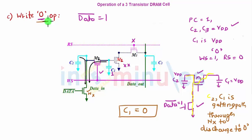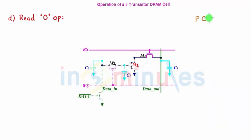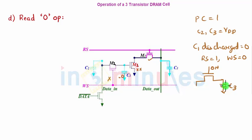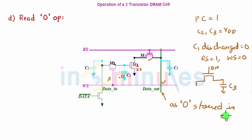Now let's verify by reading this 0. First PC equal to 1, so C2 and C3 equal to VDD. C1 is discharged to 0, so M1 is off. Read select is 1 and write select is 0, so M2 is also off and M3 is on. C3 does not get a path to discharge because M1 is off. So the logic level high is kept on data out. Since data out is not falling towards 0, the data read circuitry interprets this as a 0 stored on C1. I have successfully read the 0 written on C1.